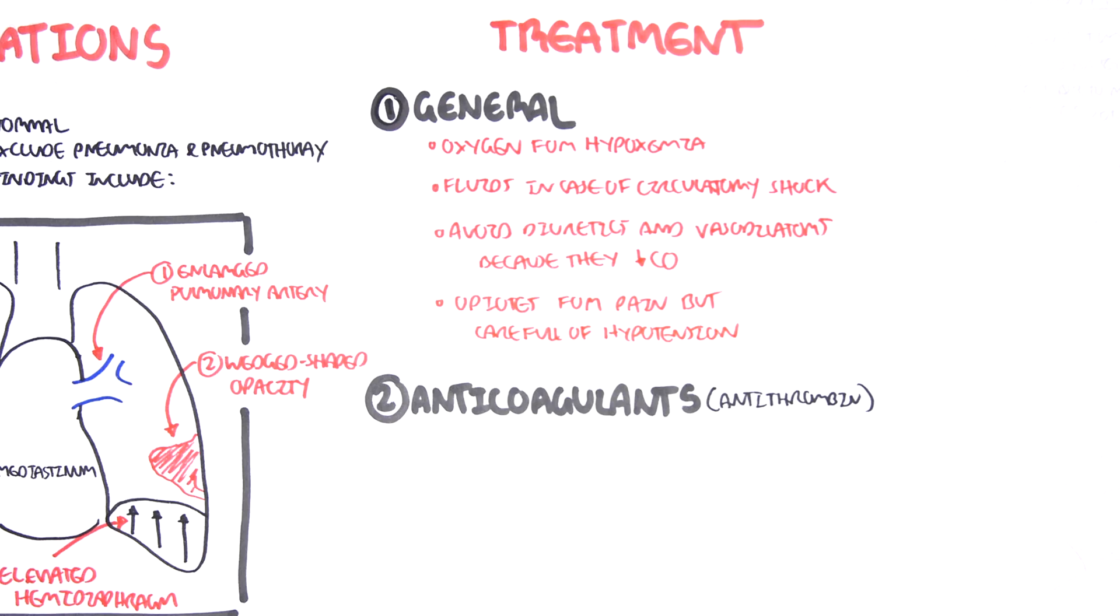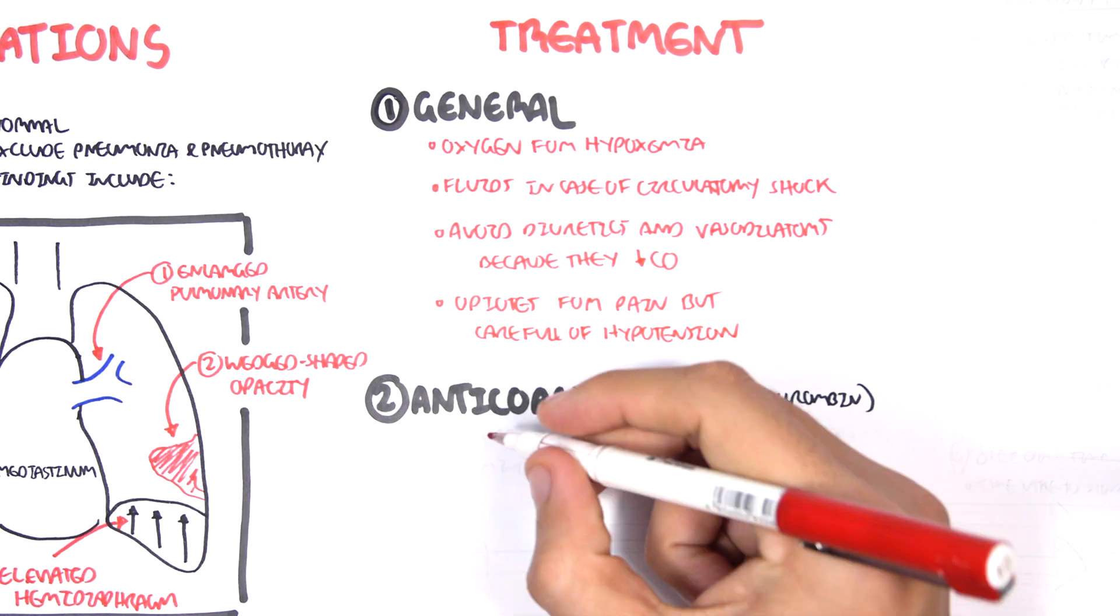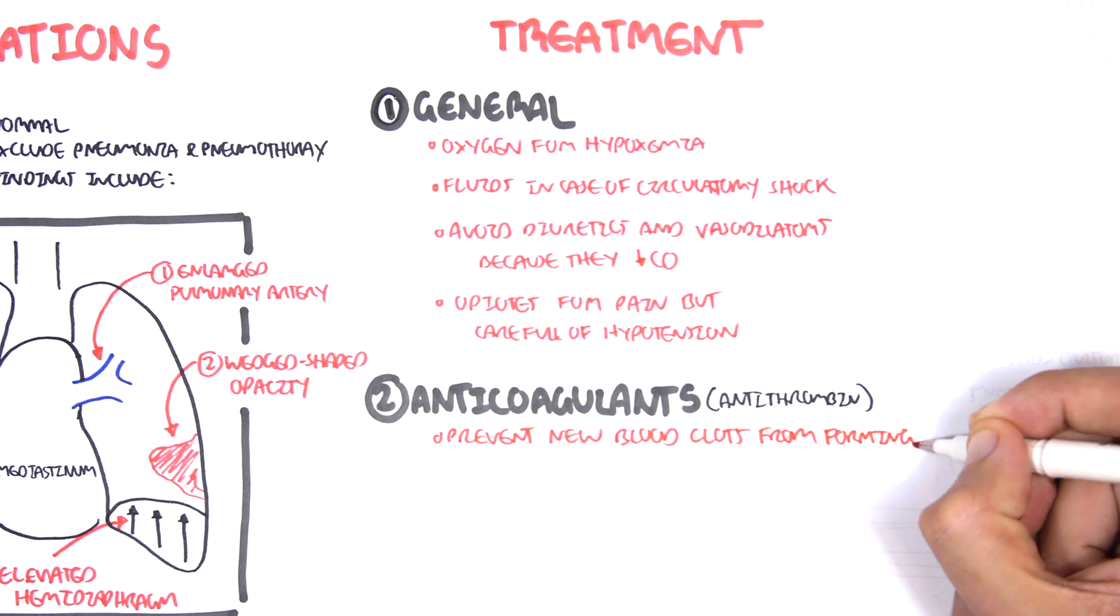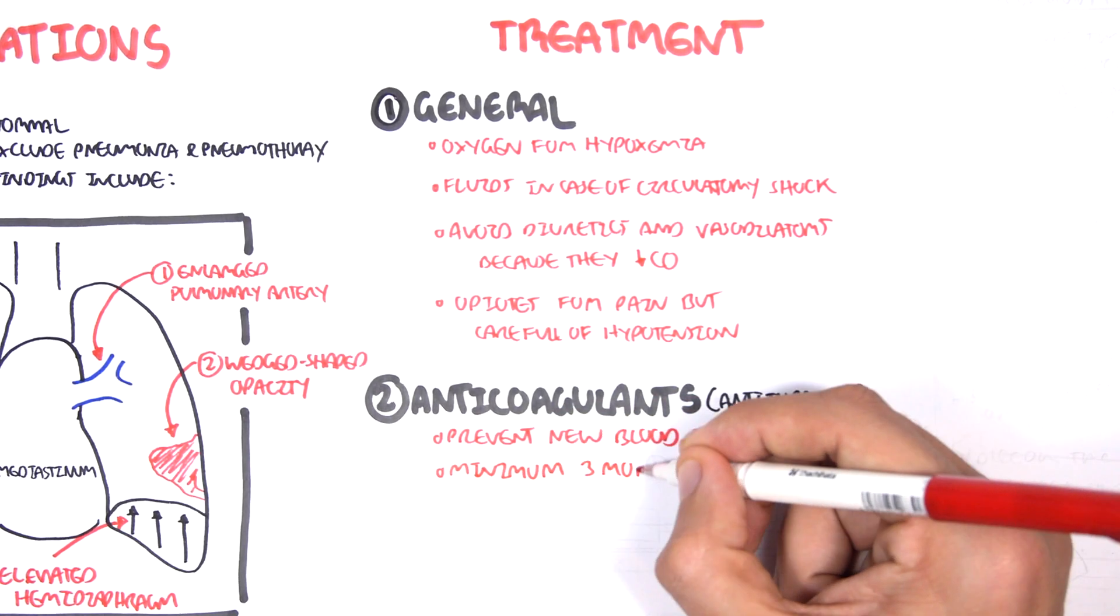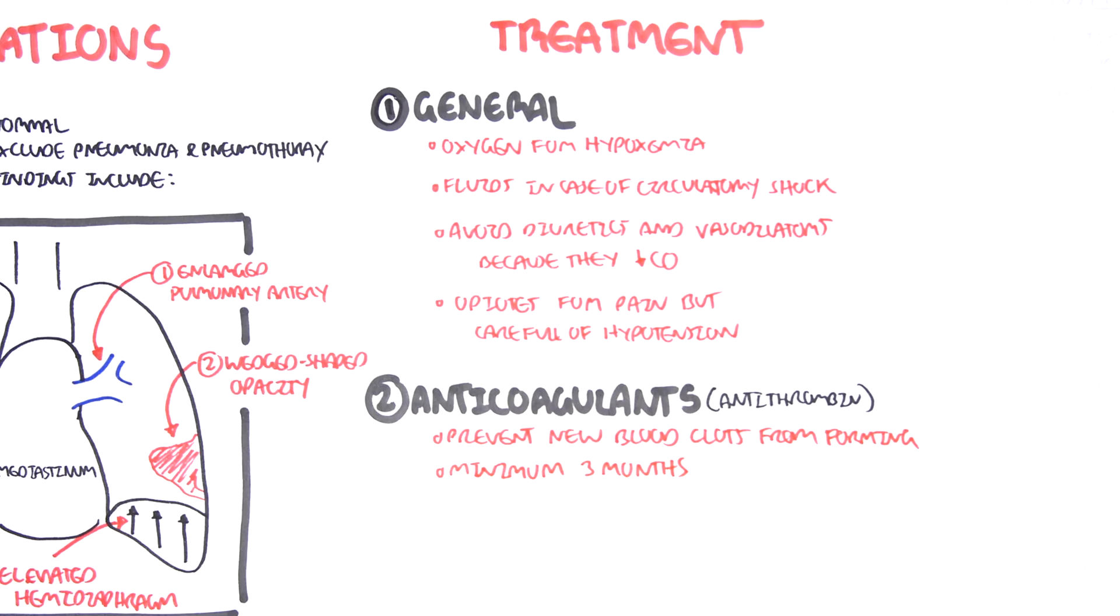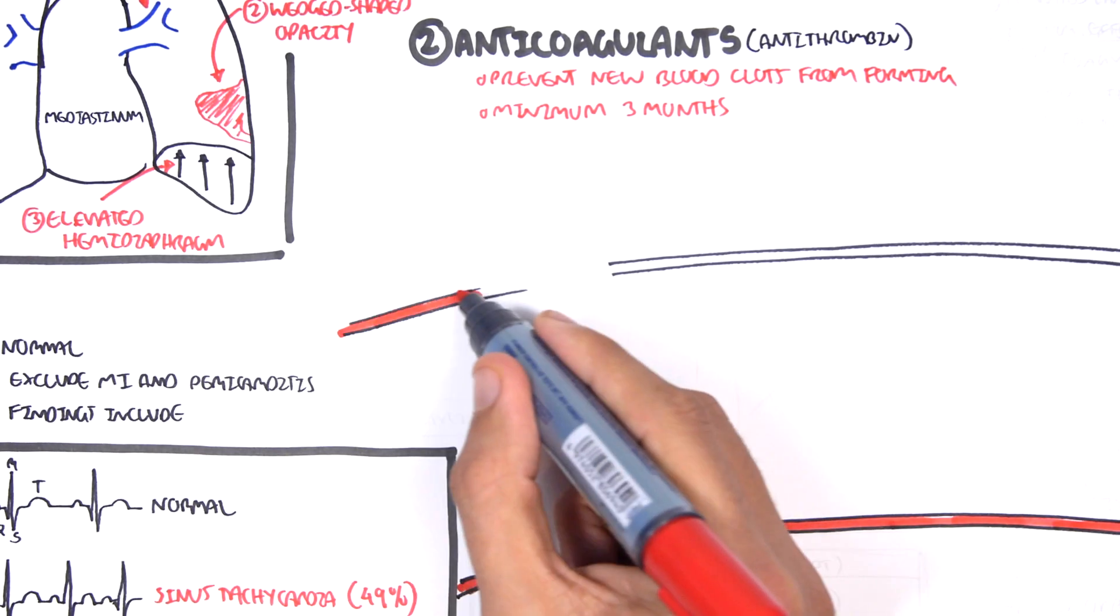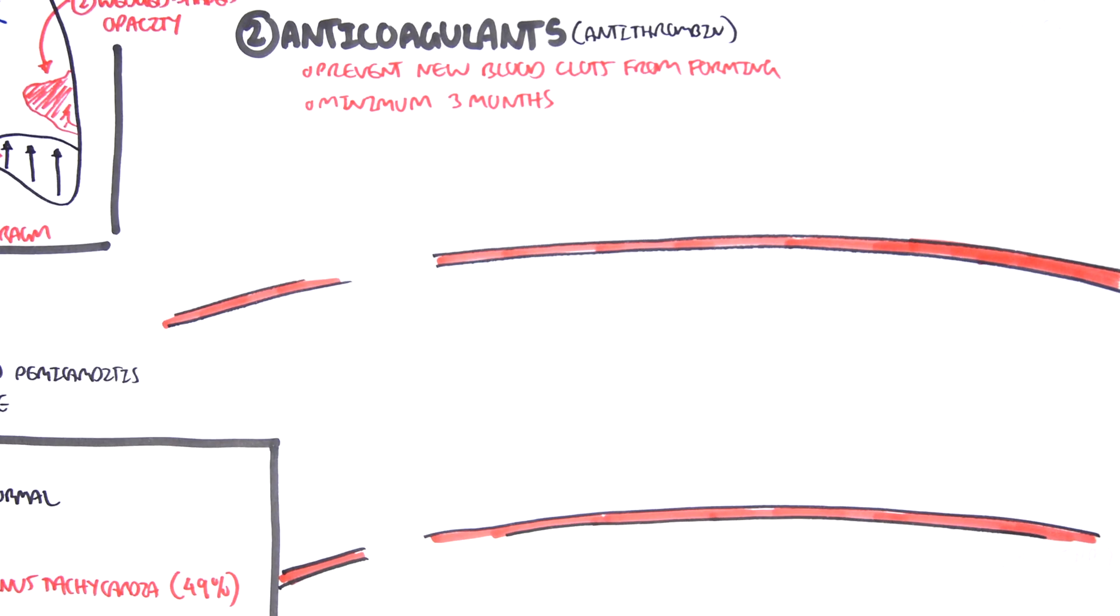Number two, anticoagulants which is very important. Anticoagulants is essentially to prevent new blood clots from forming and it's used for a minimum of three months. Before introducing these anticoagulants and their mechanism of action, it's important to revise what the coagulation cascade is.